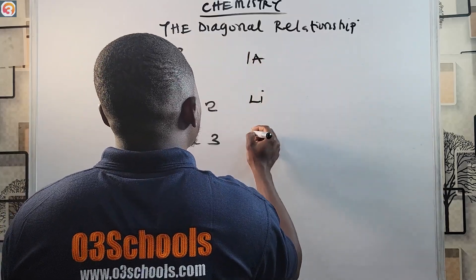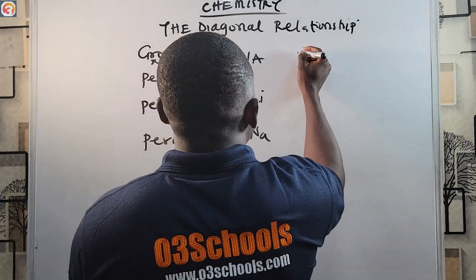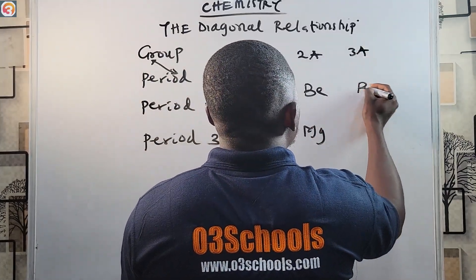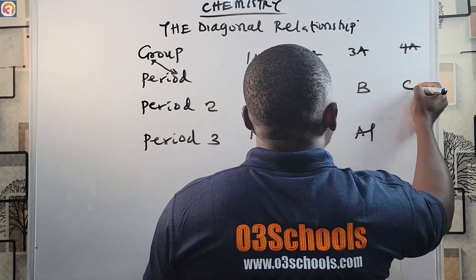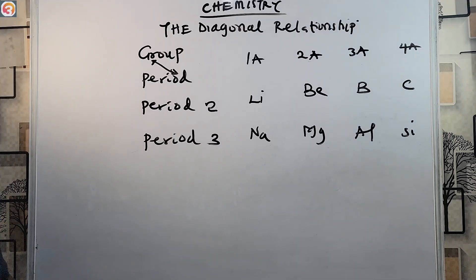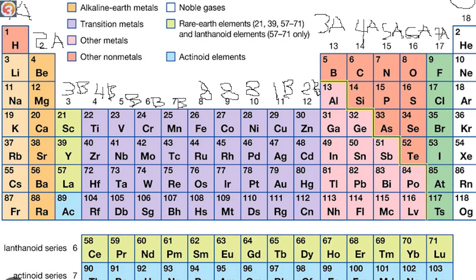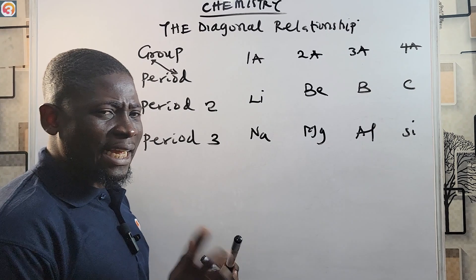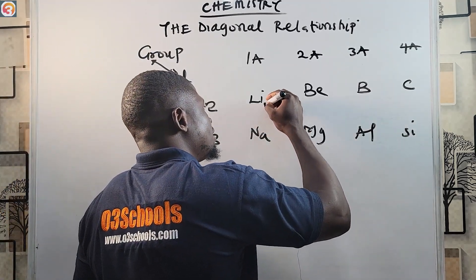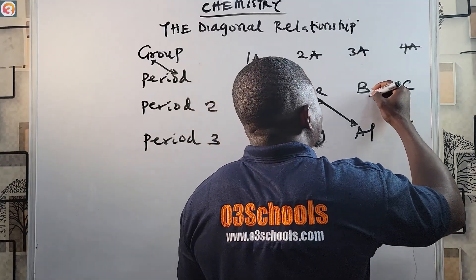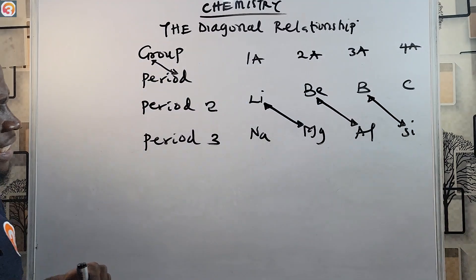In Group 1A of Period Two we have Lithium, and in Period Three we have Sodium. In Group 2A we have Beryllium and Magnesium. In Group 3A we have Boron and Aluminium. In Group 4A we have Carbon and Silicon. These are the first four groups of elements in the periodic table. The diagonal relationship means Lithium has a diagonal relationship with Magnesium, Beryllium with Aluminium, and Boron with Silicon.